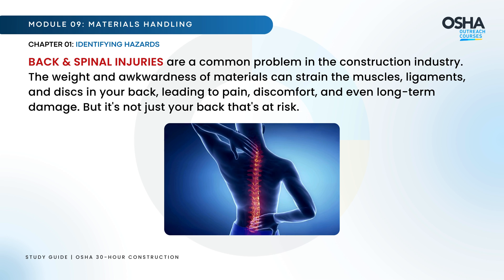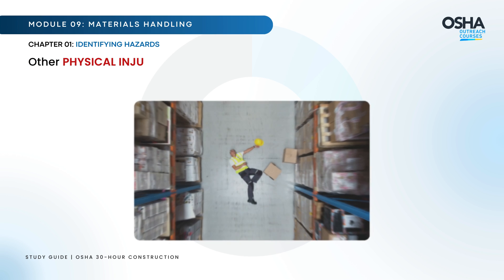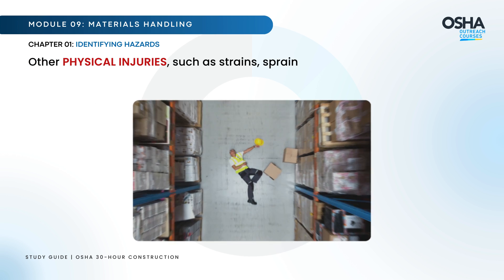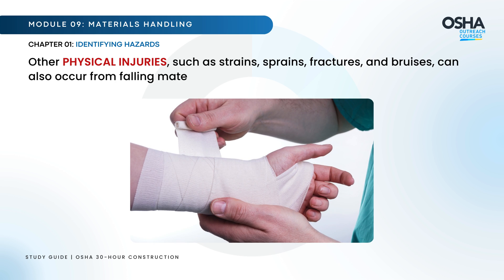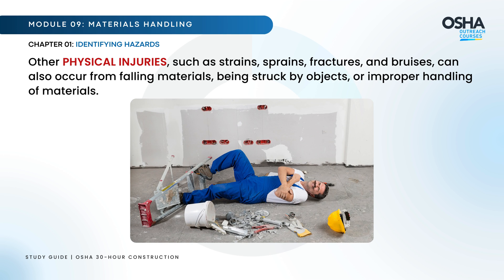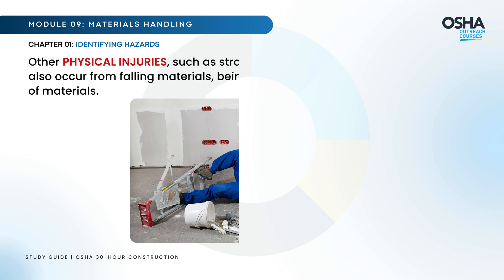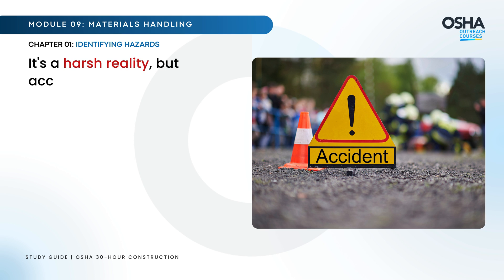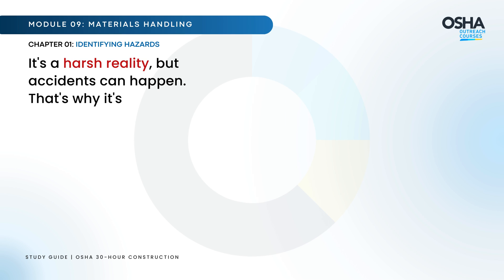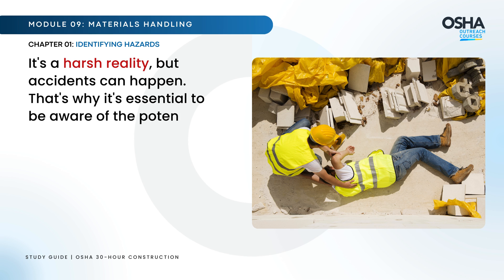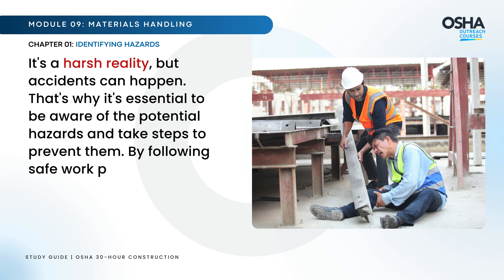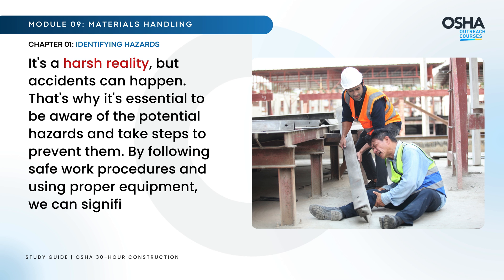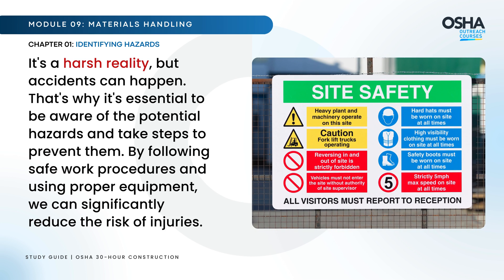It's not just your back that's at risk. Other physical injuries such as strains, sprains, fractures, and bruises can also occur from falling materials, being struck by objects, or improper handling of materials. Accidents can happen — that's why it's essential to be aware of the potential hazards and take steps to prevent them. By following safe work procedures and using proper equipment, we can significantly reduce the risk of injuries.